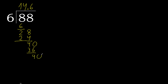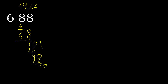Bring down 40 again. 6 multiplied by 6 is 36. Subtract. This pattern repeats — the remainder keeps returning, so the digit 6 repeats. Therefore, the decimal repeats. Finish.